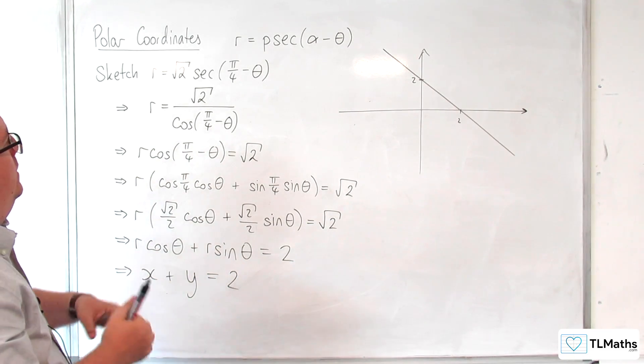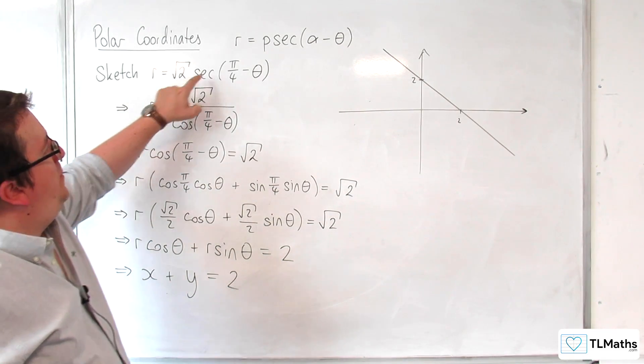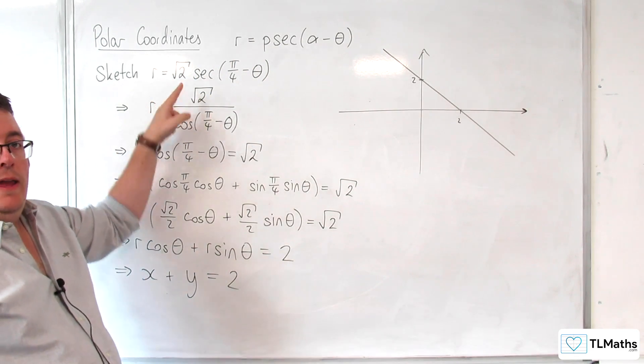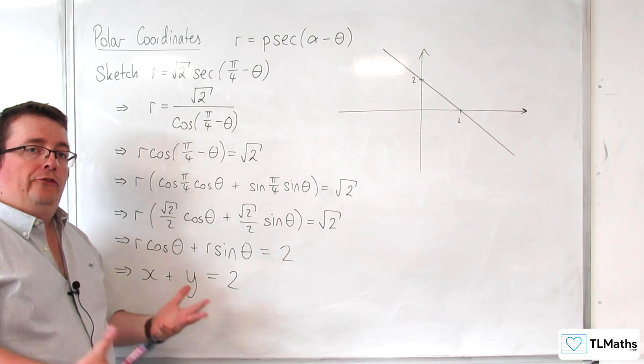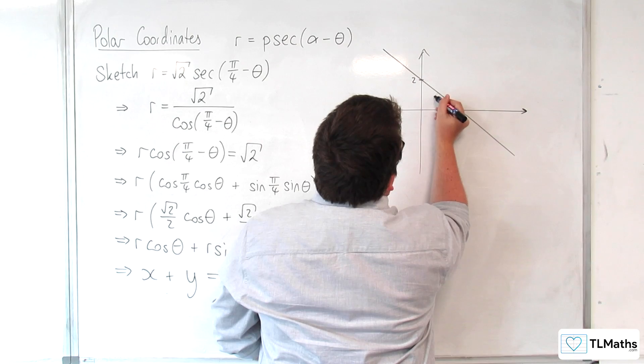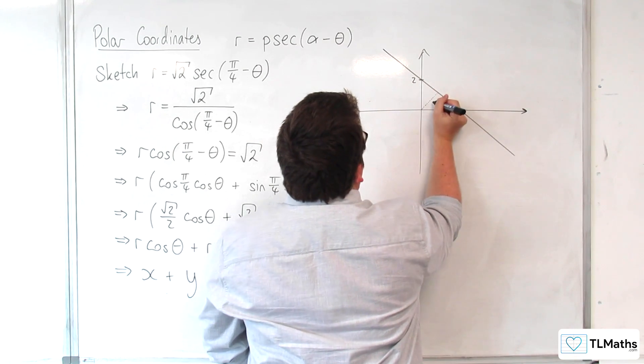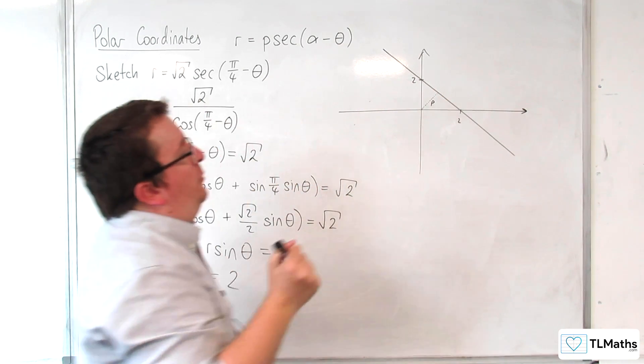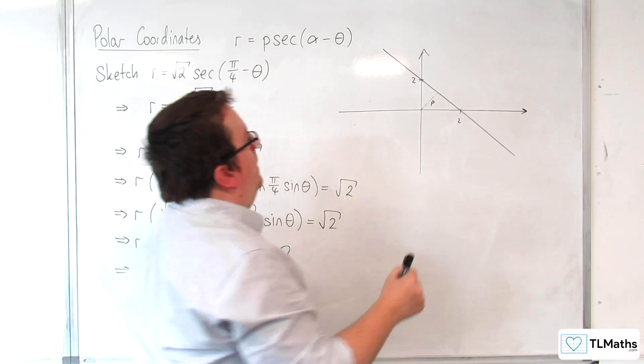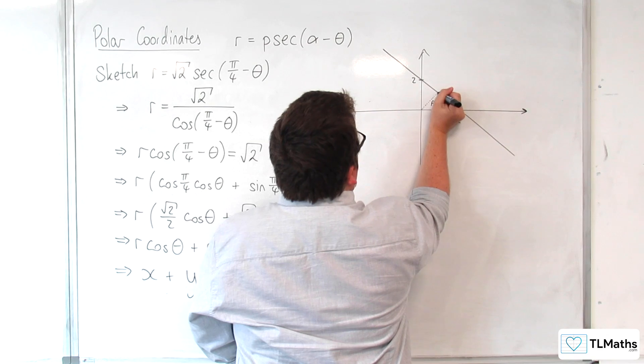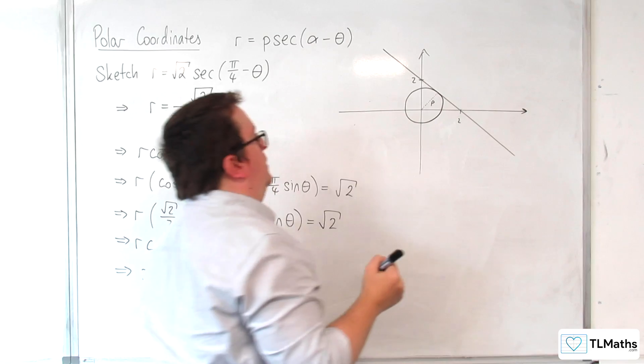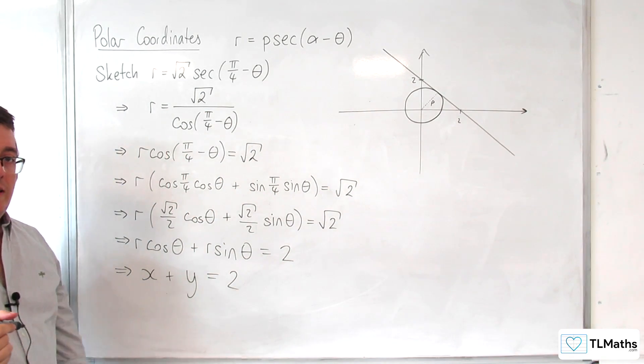Well, what you find is that the value here, the p that you've got here, tells you how far away your line is from the origin. So it actually tells you this distance here. So that distance is p. So effectively, as alpha changes, what it does is it gives you a tangent to the circle centered at the origin with radius p.